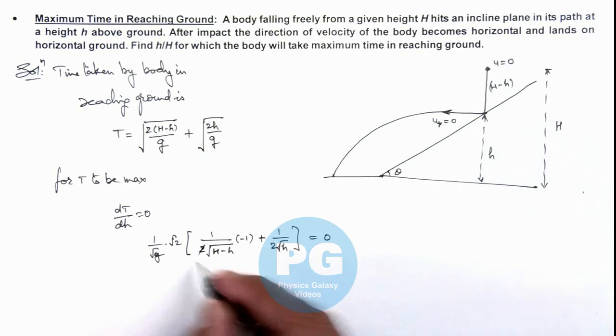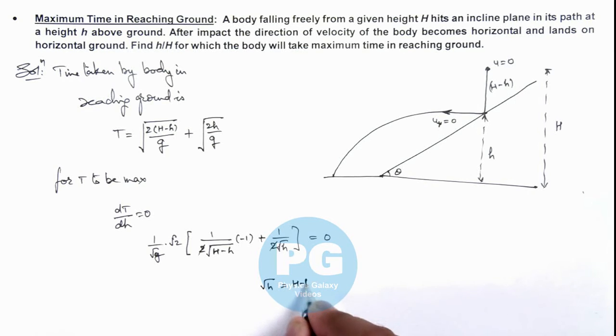Here this 2 gets cancelled out. The value we are getting is root h is equal to root of H minus h. If we square this, we get h is equal to H minus h, which implies small h by capital H is equal to 1 by 2.